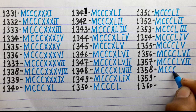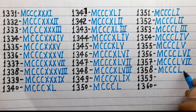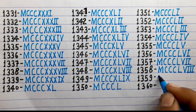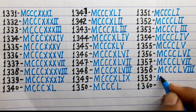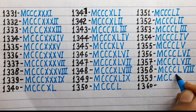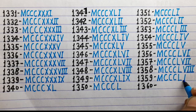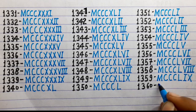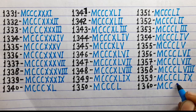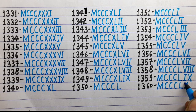1358 is MCCCLVIII. 1359 is MCCCLIX. 1360 is MCCCLX.